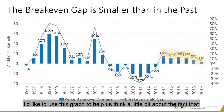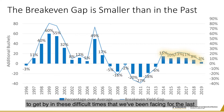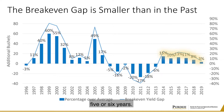I'd like to use this graph to help us think about the fact that a 10% increase in productivity — an increase in yields — is what allows us to get by in these difficult times that we've been facing for the last five or six years.